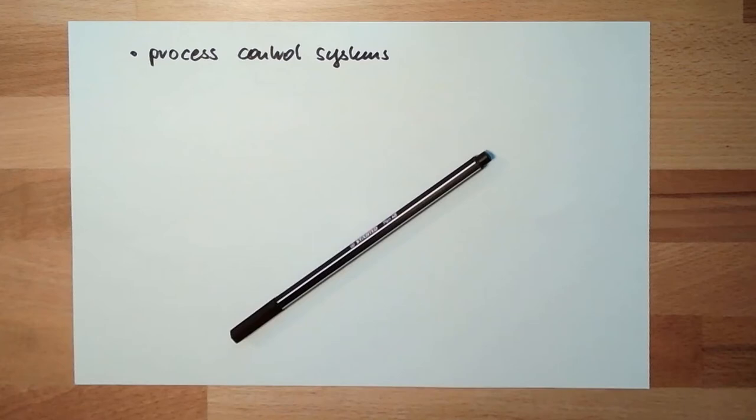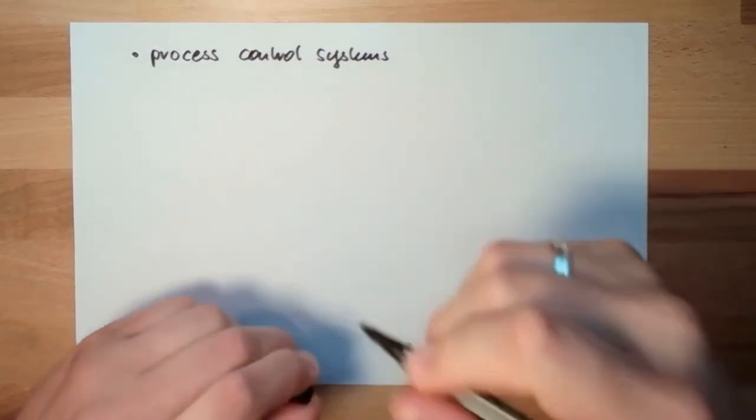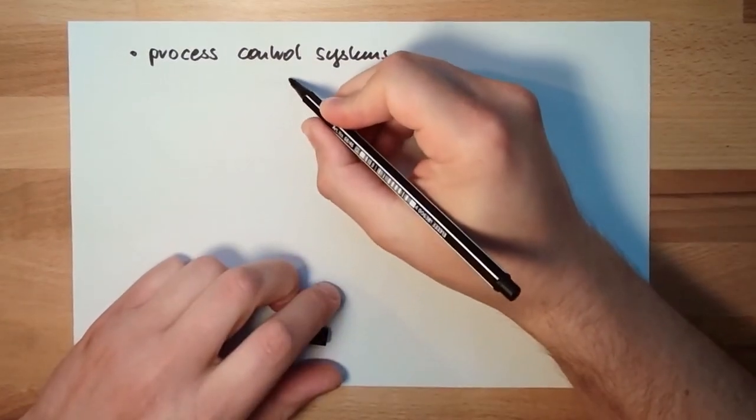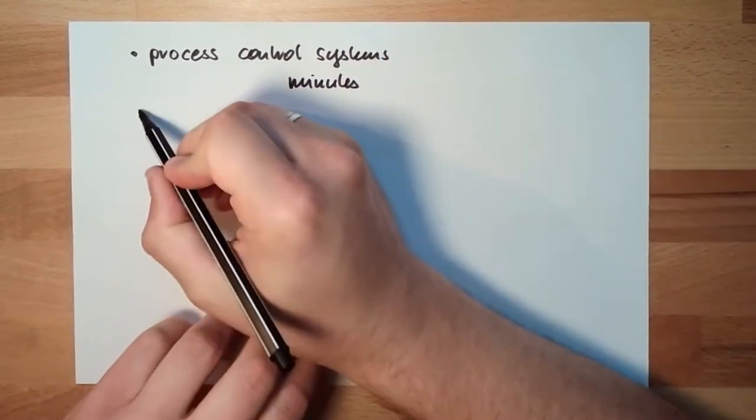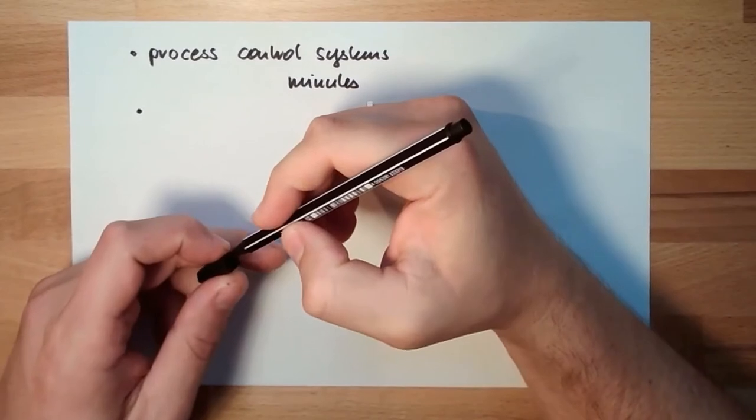Typical, typical, we are here somewhere at minutes, so the time, time needs to be minutes. That's process, process control system.